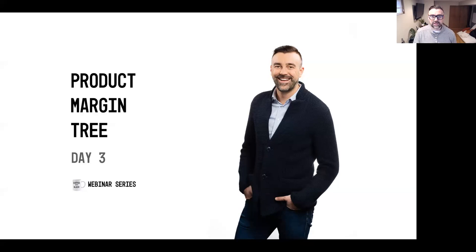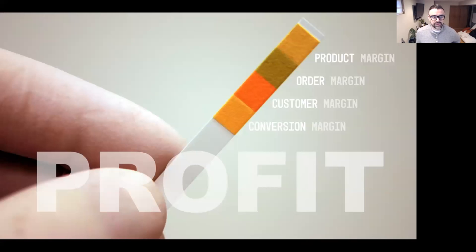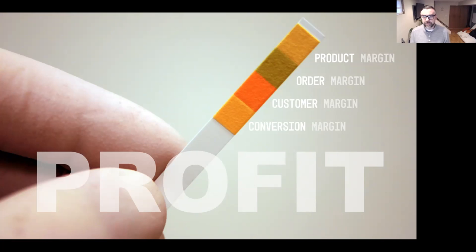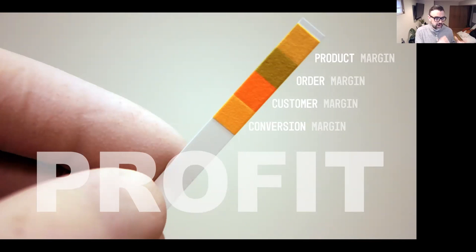For those of you that are just joining us, or maybe just a quick recap — we're going to revisit our Profit Litmus Test. The Profit Litmus Test is basically how we're going to look at profit for this 30-day challenge. It really breaks down into four key elements. You've got the product margin at the top of the list, and that's basically everything that has to do with the pricing of products you're selling or your cost of goods sold.